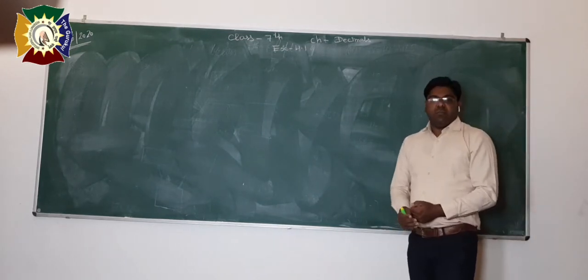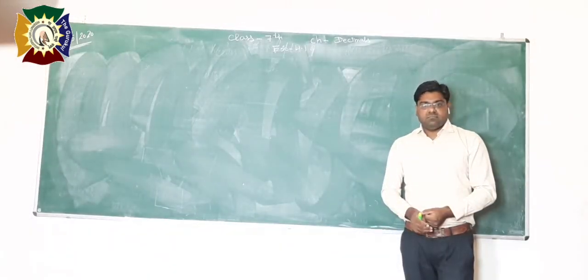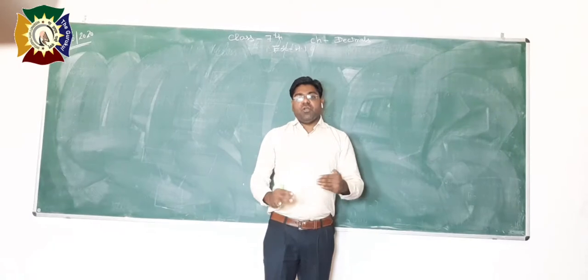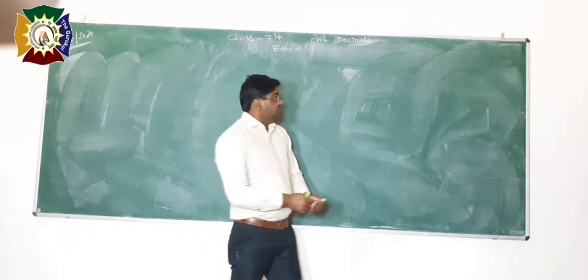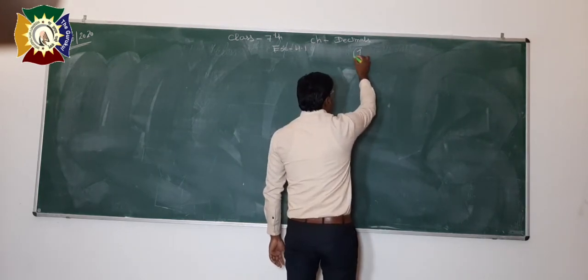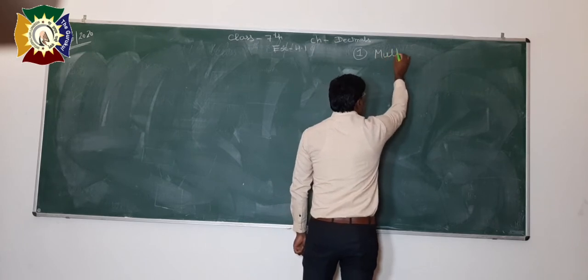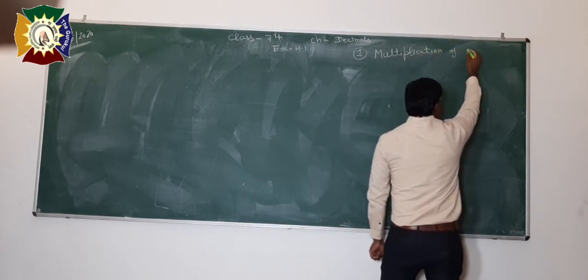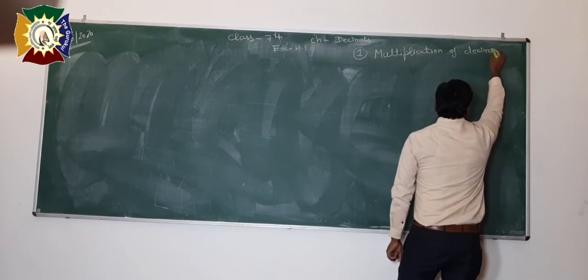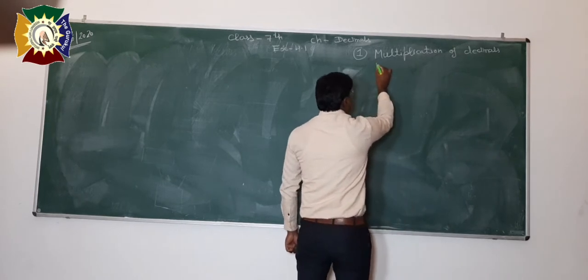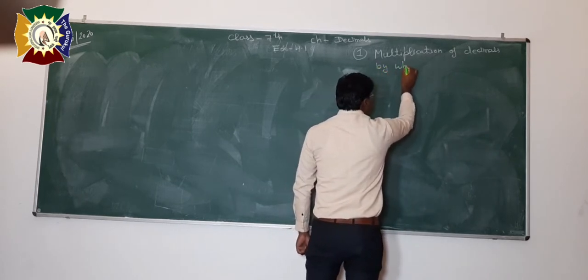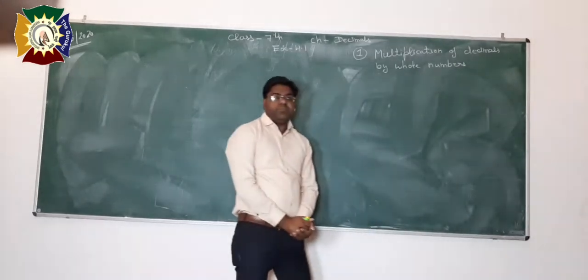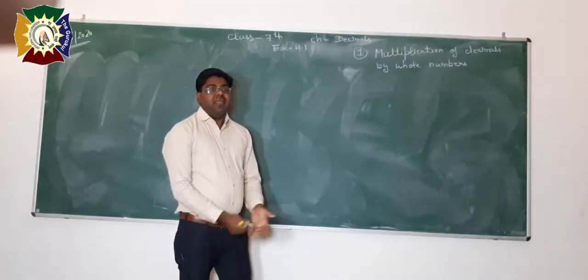Today we will learn how we can multiply decimals. There are different types of decimals. The first thing we have to discuss is the multiplication of decimal numbers by whole numbers. We will learn this by taking an example.